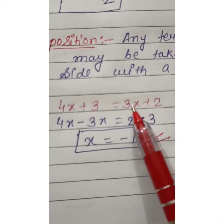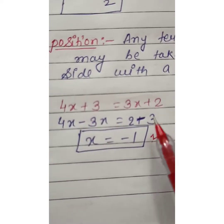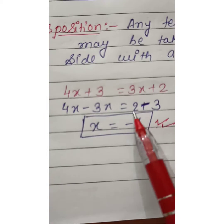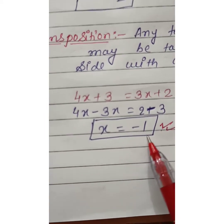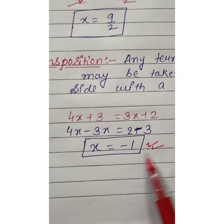And plus 3 goes to right hand side it becomes minus 3. The sign that appears becomes opposite. 4x minus 3x equals x and 2 minus 3 equals minus 1. Thus on transposition we obtain x equals minus 1.